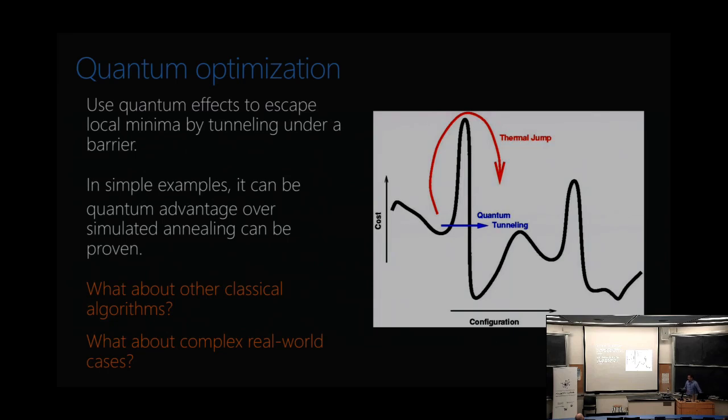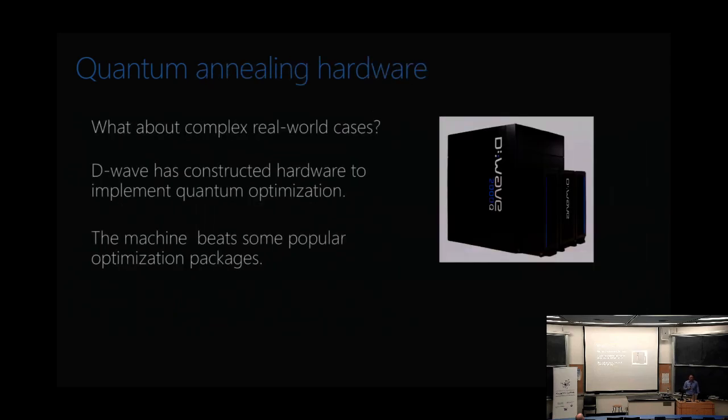But these are very suggestive results but leave major questions and two of those questions are well first of all is simulated annealing the right thing to be competing against are there better classical algorithms that we could compete against and secondly although these nice exactly solvable models are very instructive what happens when you apply these algorithms to more complex real-world cases. So these are kind of like the two central questions underlying this whole talk.